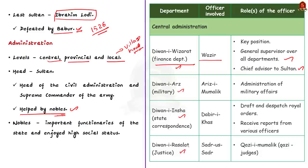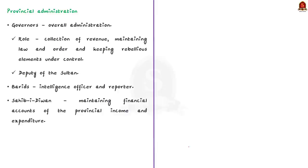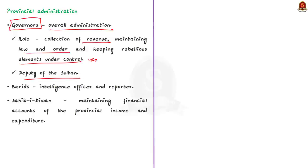In the provincial administration, provinces were placed under the charge of governors responsible for the overall administration of the area. This involved ensuring the collection of revenue, maintaining law and order, and keeping rebellious elements under control. The governor was the deputy of the Sultan in the provinces. Important officers in the provinces were Baridz and Sahibi Diwan. Baridz were intelligence officers and reporters, while Sahibi Diwan maintained the financial accounts of provincial income and expenditure.